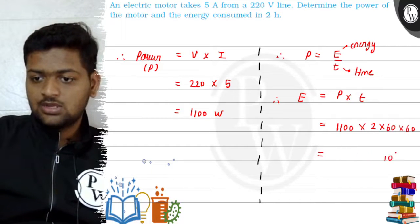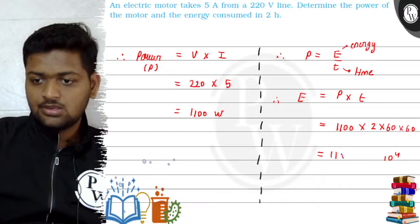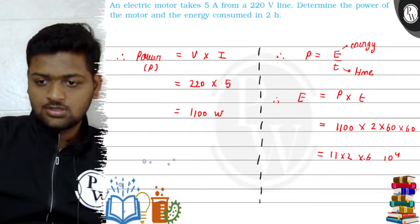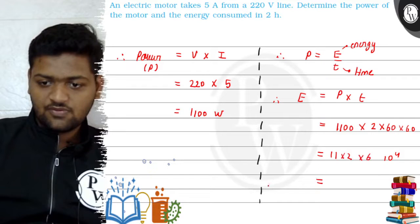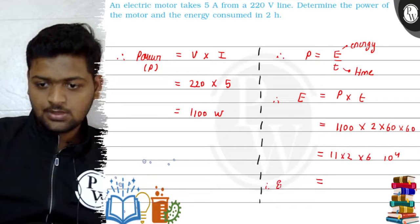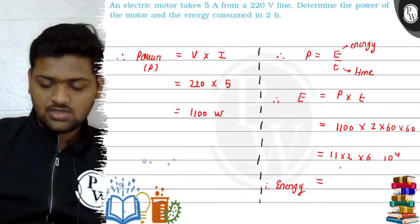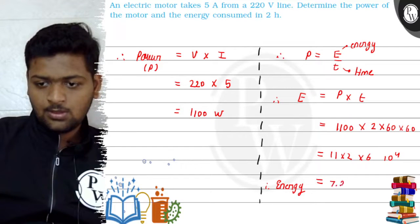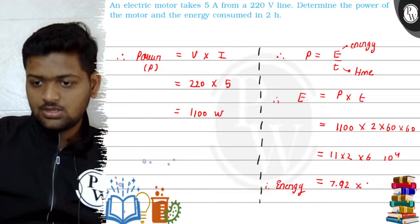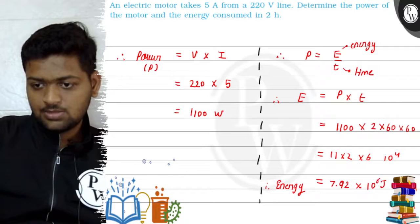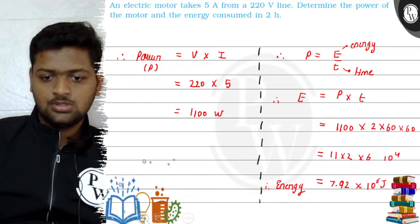We solve this: it will be 11 × 2 × 6 × 10⁴. So our final value of energy comes out to be 7.92 × 10⁶ joules.